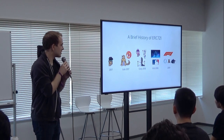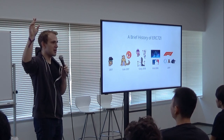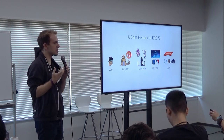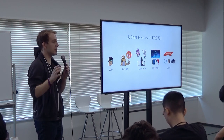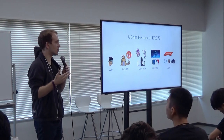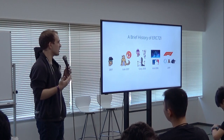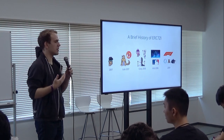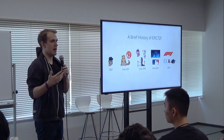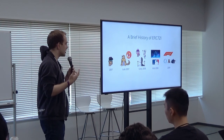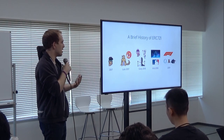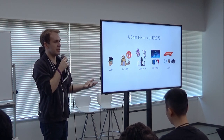A little history of ERC-721: in 2017, CryptoPunks was sort of the first non-fungible asset on Ethereum — there were non-fungible assets using Bitcoin counterparty, but CryptoPunks was the first crypto collectible idea on Ethereum with no standard around it. What CryptoKitties did was build a game around these assets and pioneer the ERC-721 standard, which was refined by the Ethereum community so it could be leveraged by other projects.